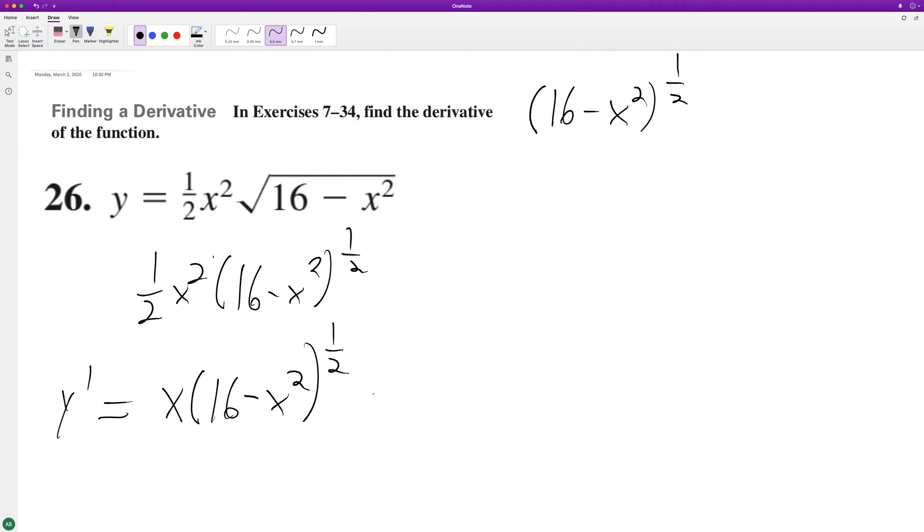And then plus 1 half x squared. And then pull down the 1 half. Derivative of the inside is negative 2x. And then we have 16 minus x squared raised to the negative 1 half.